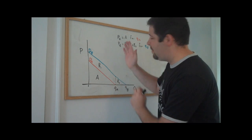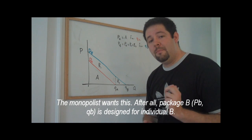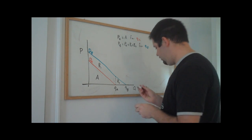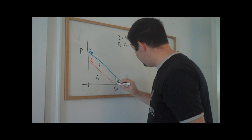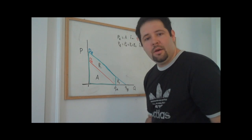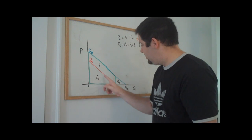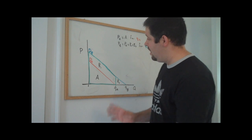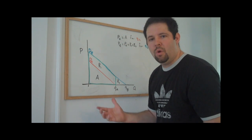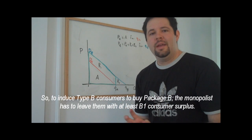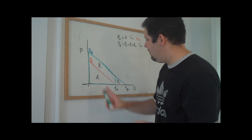So individual A wants to pick package A. What about individual B — does individual B want to pick package B? It turns out that if individual B chose package A, that individual would get to consume QA units of the good and would get consumer surplus equal to this green area. That consumer surplus is actually bigger than the price paid for package A. This consumer would actually get positive surplus — specifically B1 — if individuals of type B bought the package designed for individuals of type A. So the monopolist can't extract this area B1.